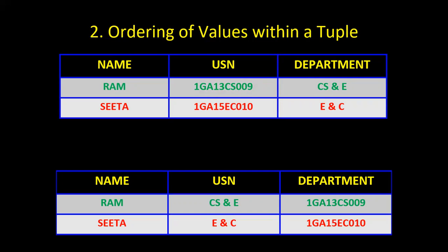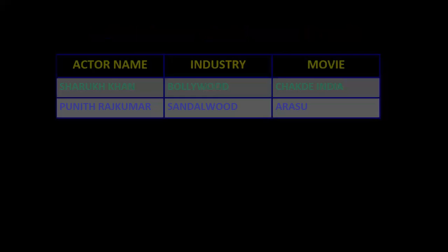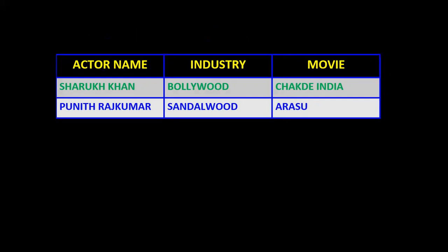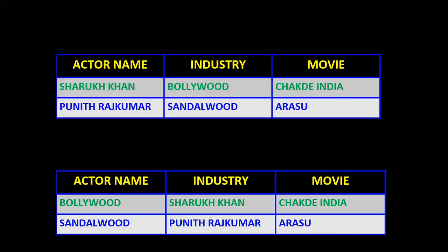This shows that ordering of values within the tuple is very important. If I change the order of values within the tuple, it will change the meaning. Another example: in the original table, Shah Rukh Khan belongs to Bollywood industry and acted in Chakde India; Puneet Rajkumar from Sandalwood acted in Arasu. After changing the values within the tuple, actor name becomes 'Bollywood' — it has damaged and changed the meaning of the tuples.